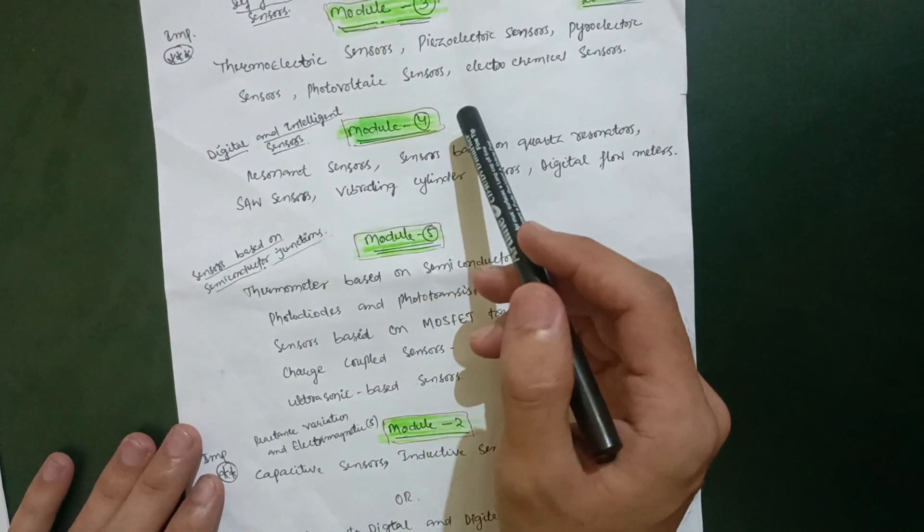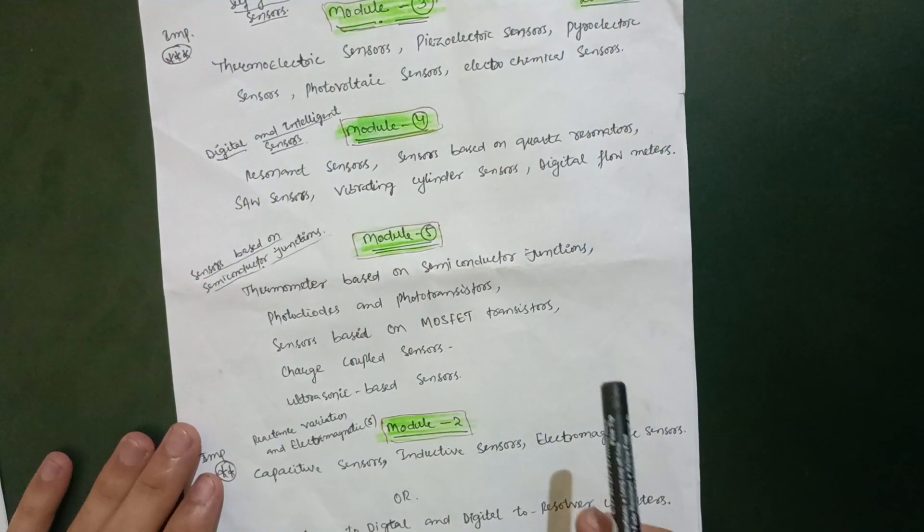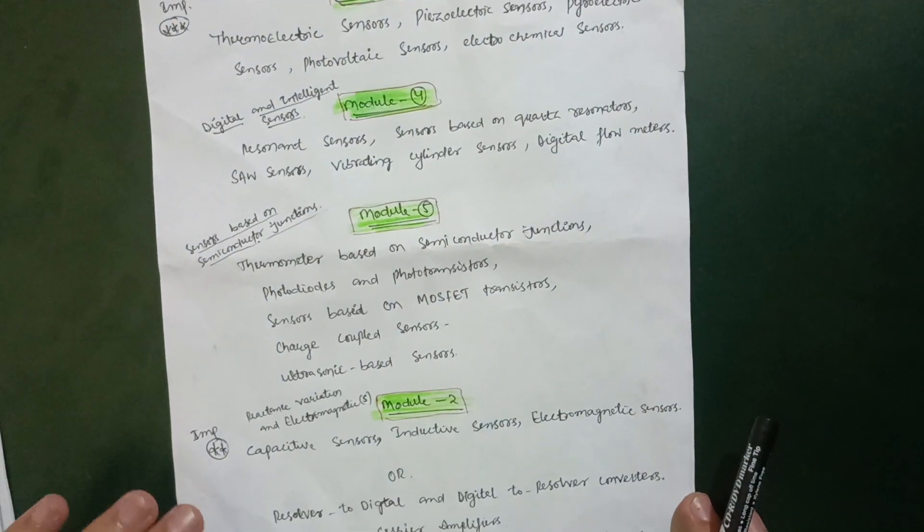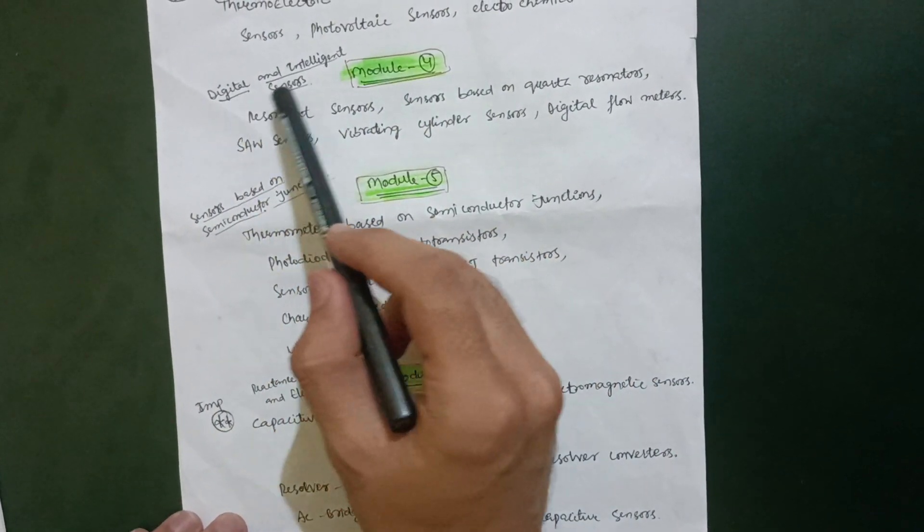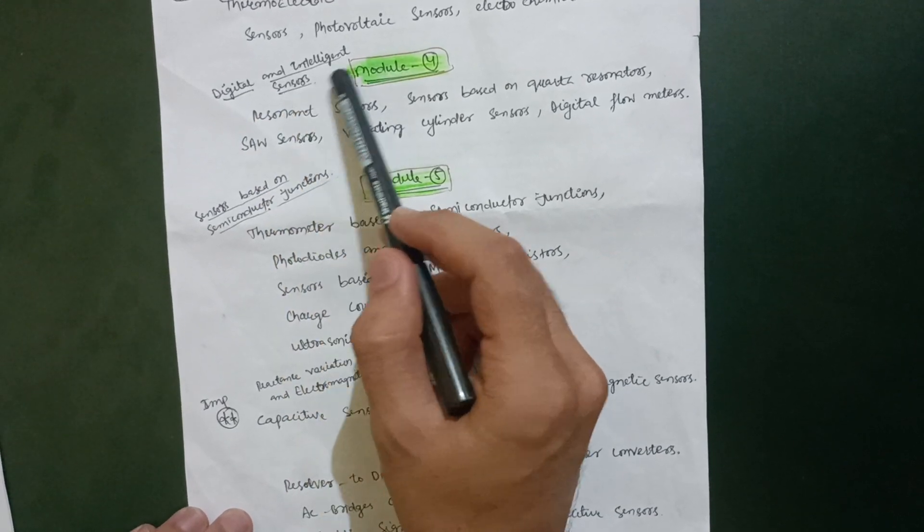My dear friends, I will just brush up this particular video within three or four minutes so that you can easily go through these types of contents. It will be beneficial for you people. In Module 4, the name is Digital and Intelligent Sensors.